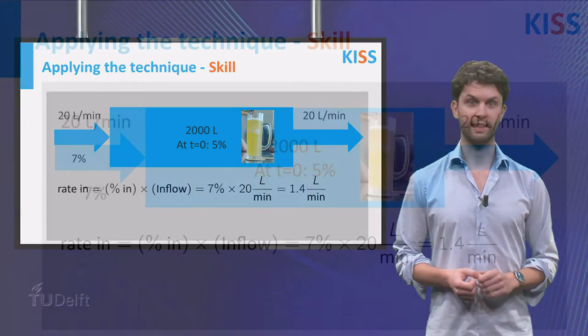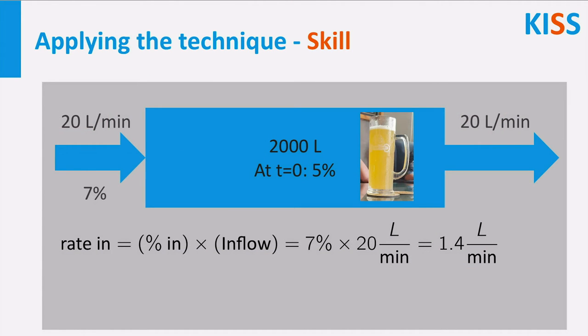The inflow is 20 liters per minute of beer of 7% alcohol. So the rate in of alcohol is 1.4 liters per minute.